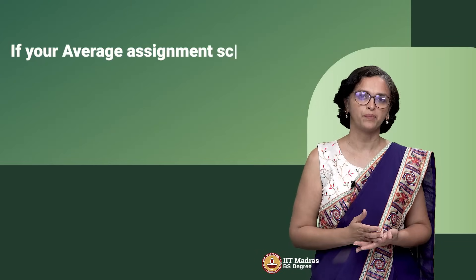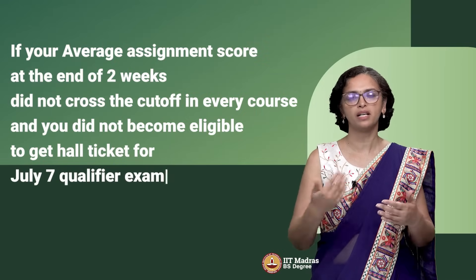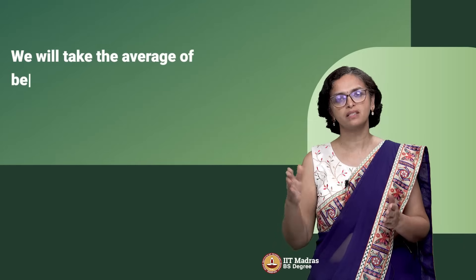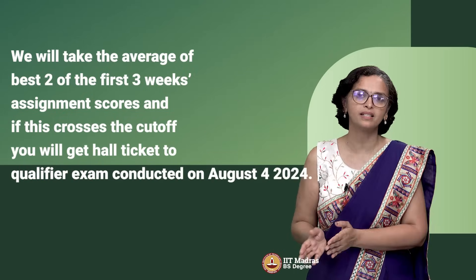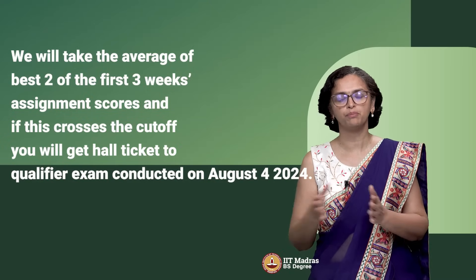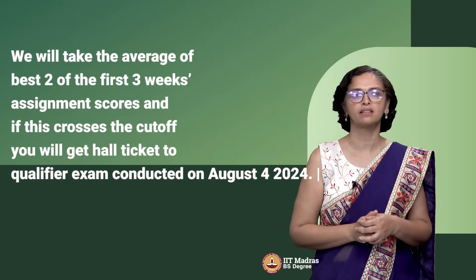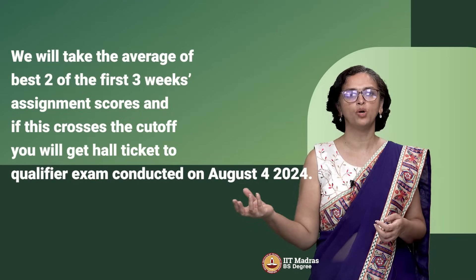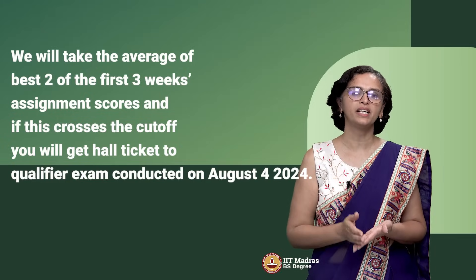For those who do not qualify after the first two weeks — when we take the average of the first two weeks' graded assignments — if the average does not cross 40 out of 100, or as per your category cutoff, we have another option. We will consider the best two out of the first three weeks of graded assignments to see whether you qualify. Maybe you have not done well in week one and week two, but you have a chance to make it up in the week three graded assignment. At the end of week two, we say who is eligible to write the exam on July 7th. Then week three comes, we take the best two out of three, and if you qualify you can write the qualifier exam on August 4th. This is how students in the qualifier process get two chances.